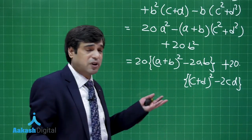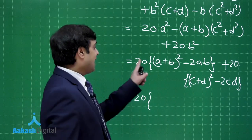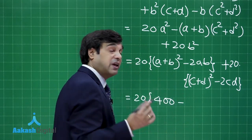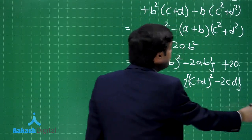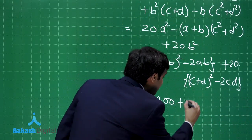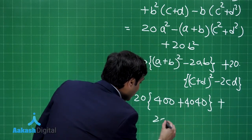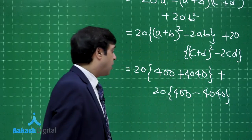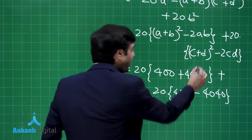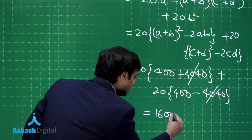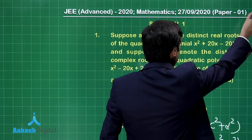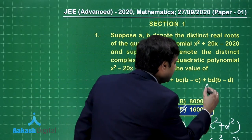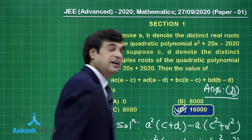Now just putting the values back: 20 times (a + b)² means 400, minus 2ab. The product ab is −2020, so twice of it gives +4040. Plus 20 times (400 − 4040). You can clearly see the 4040 × 20 terms cancel, and what we are left with is 16,000. Checking the options, 16,000 is Option D — the required result.